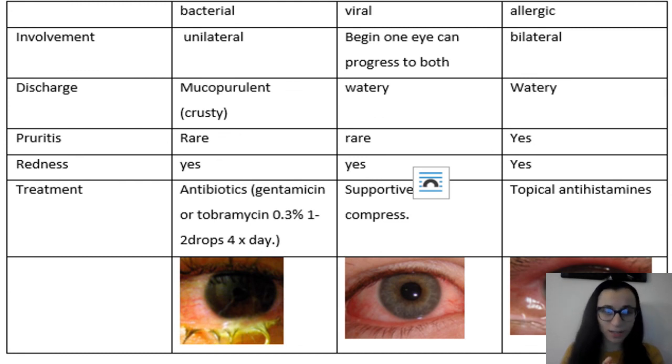Now we go on to conjunctivitis. You have bacterial, viral, and allergic. Here we could see the symptoms. Number one, you could see it. Number two, we're going to differentiate it. With bacterial, it's unilateral. With viral, it could be in one but could progress to both. It could have both or one. And allergic is always bilateral. So if it says it's unilateral, you don't want to think of allergic. You want to think of bacterial, but you also want to rule out viral.